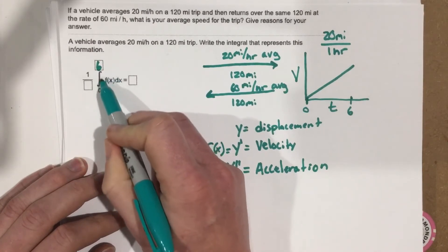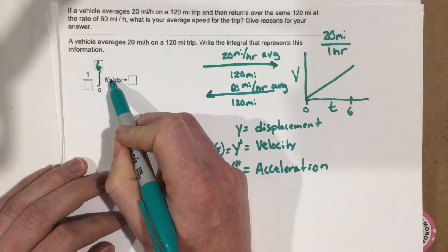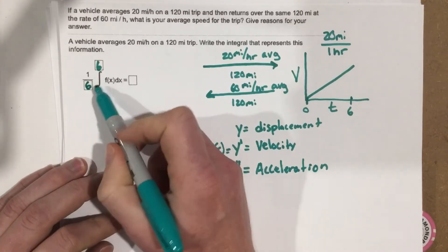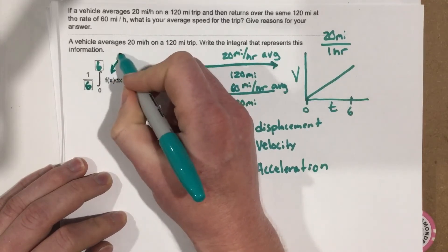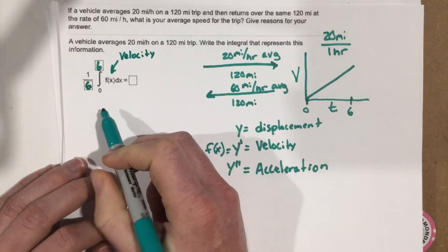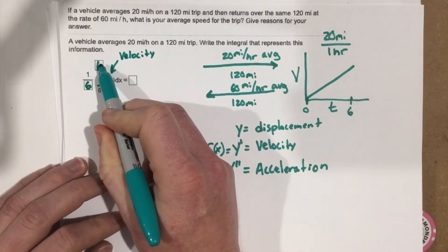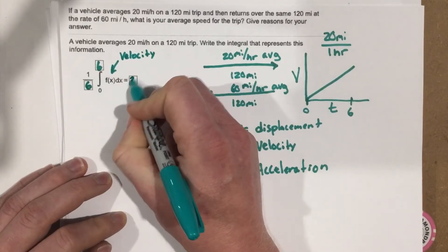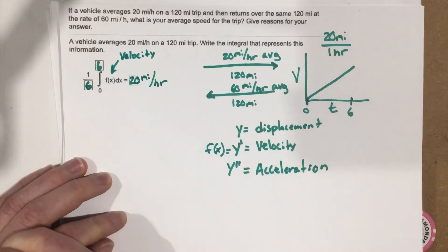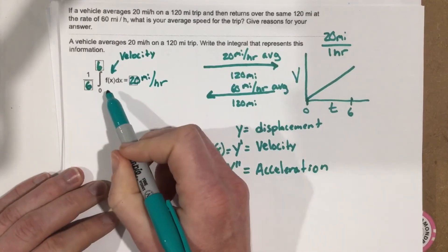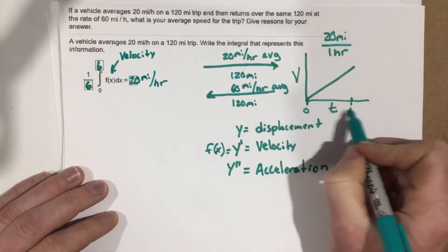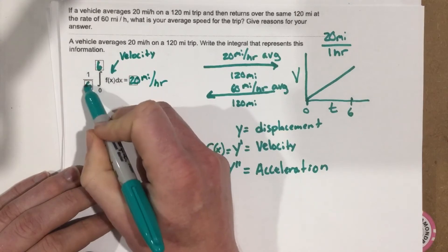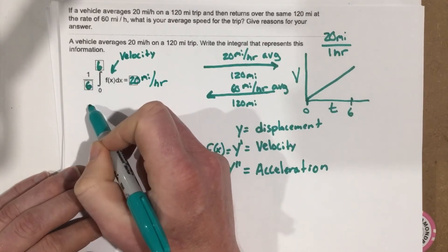We take that total displacement and multiply by one over six hours to get our average speed. When we do that we get 20 miles per hour. So the first part of this problem is identifying that time is what we integrate with respect to — from zero to six — and we multiply by one over six hours to get our average velocity.